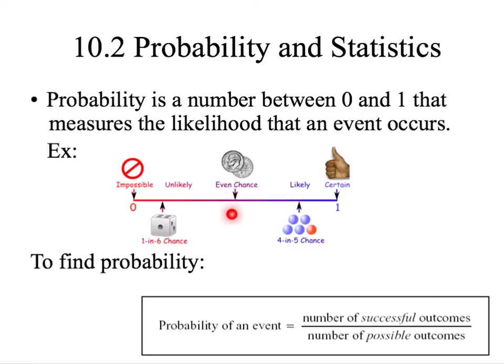Even chance would be 50-50, 1/2. Something very likely is 4/5, and 1, 100% of the time, is a certain, no-doubt-about-it kind of situation. As it says here at the bottom, to find probability, probability of an event, you take the number of successful outcomes and divide it by the number of possible outcomes.